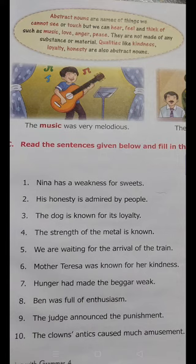Children, abstract nouns are the name of things we cannot see or touch. For example, things we can hear, feel, or think of — like music, love, anger, or peace. They are not made of material. And we can also say feelings are abstract nouns, like kindness, loyalty, honesty, etc.